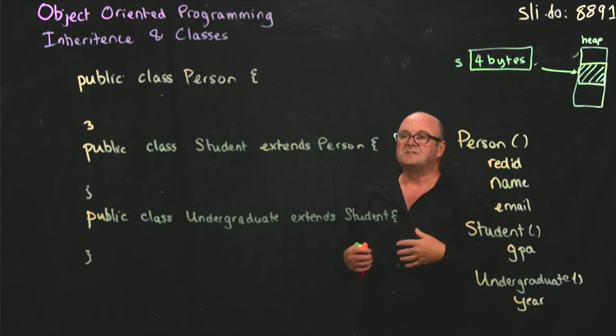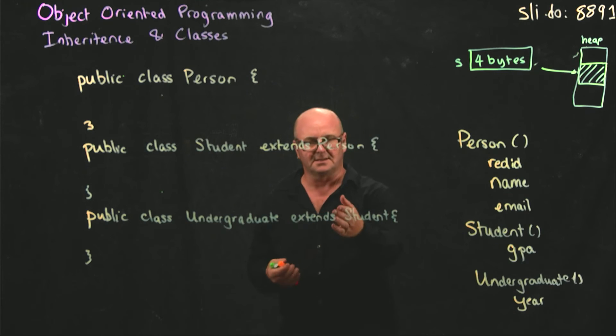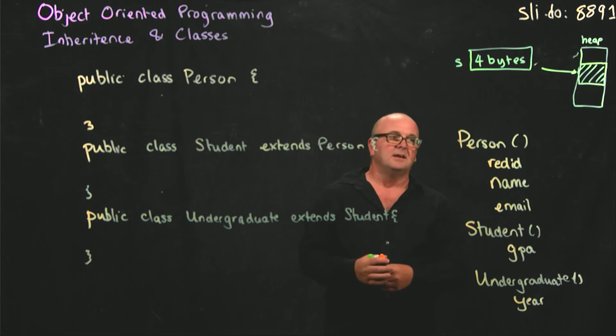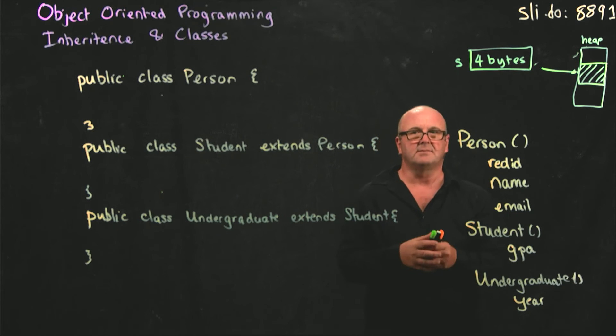The undergraduate doesn't have to say it extends person. That's given by the fact that student extends person. And each class can only extend one other class.